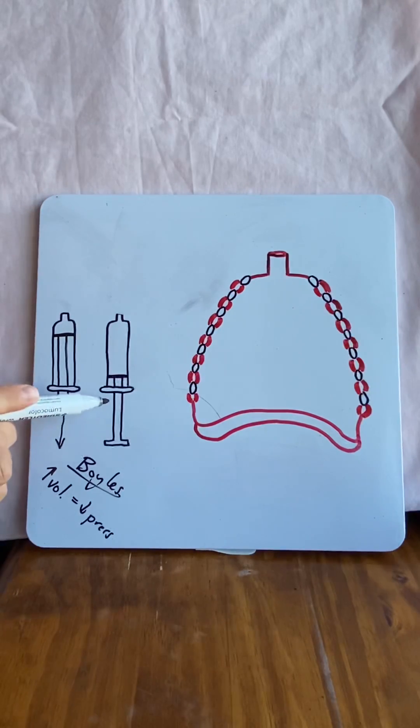So that means by pulling on the syringe, the volume inside the barrel increases and the pressure inside decreases.